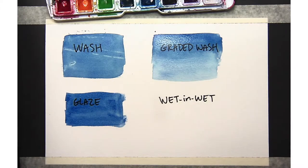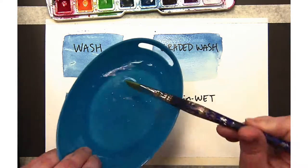Then a glaze is when you have two colors. So we're going to start the first step by painting a wash, and then we'll come back to that.